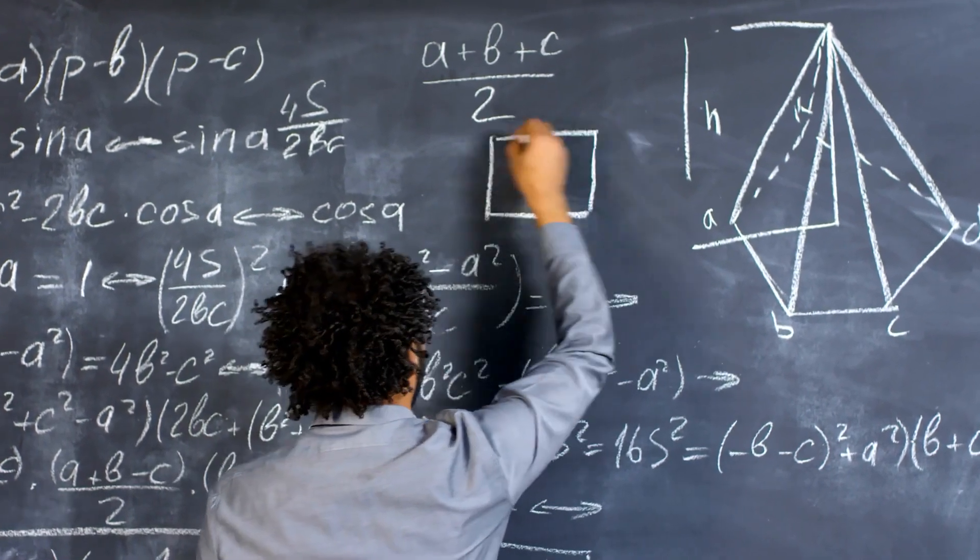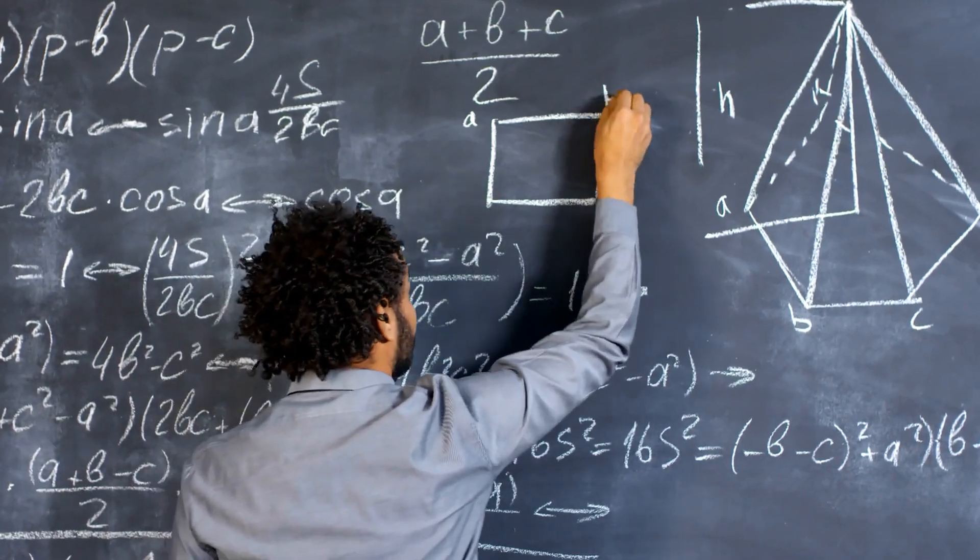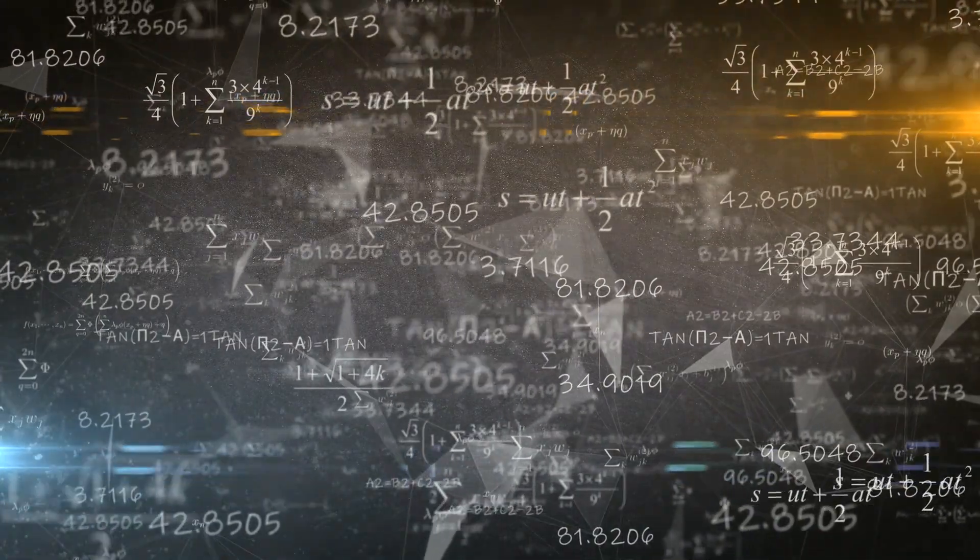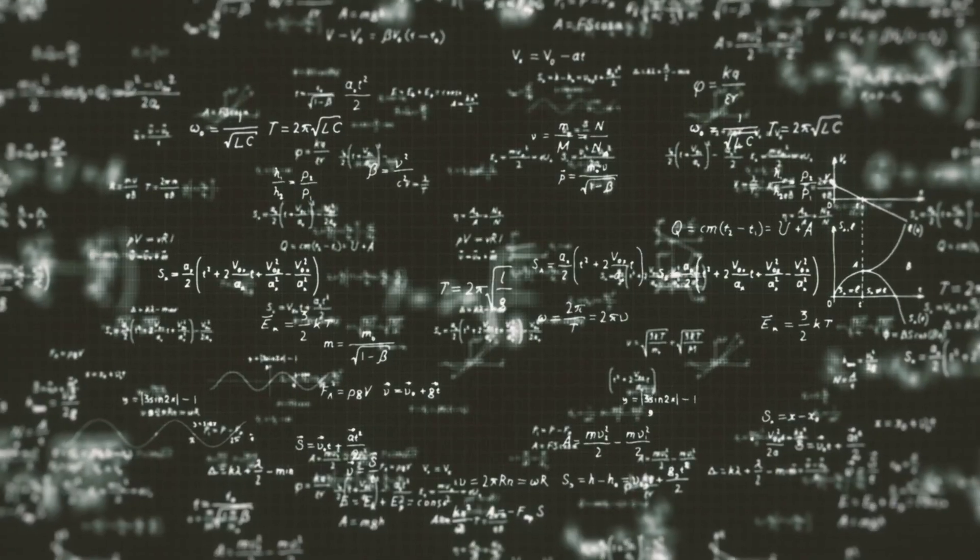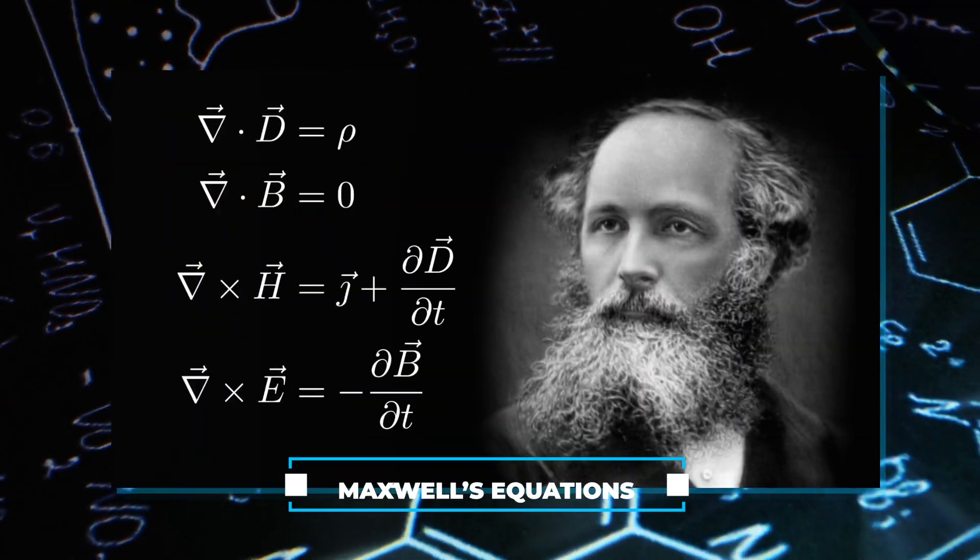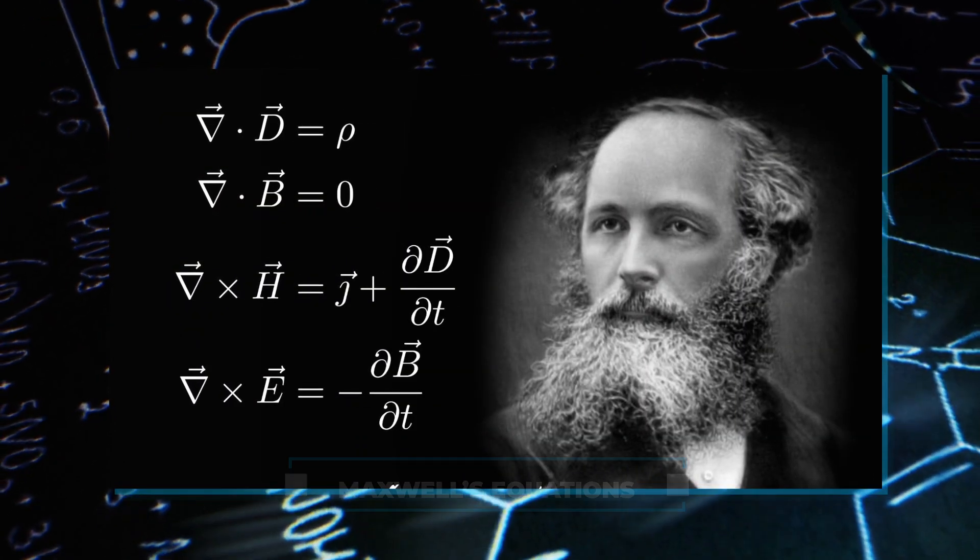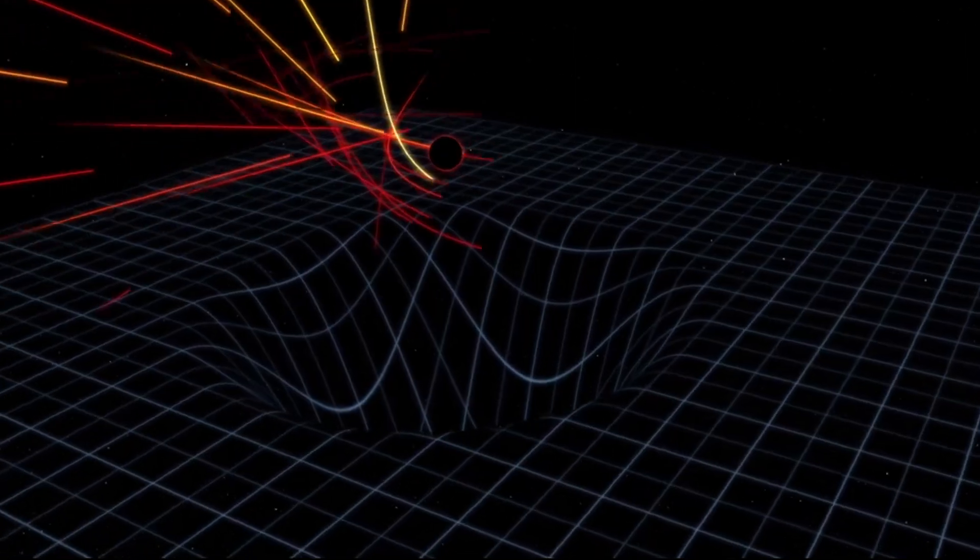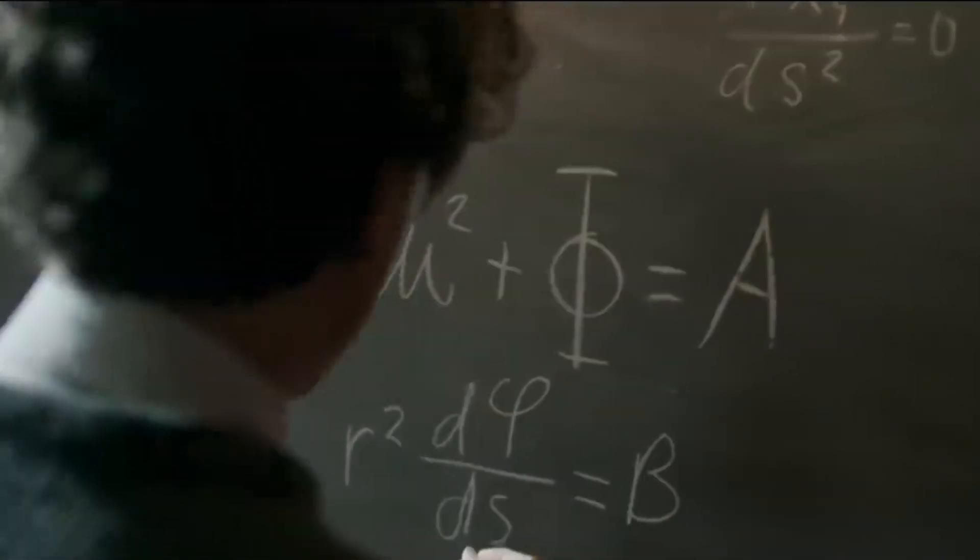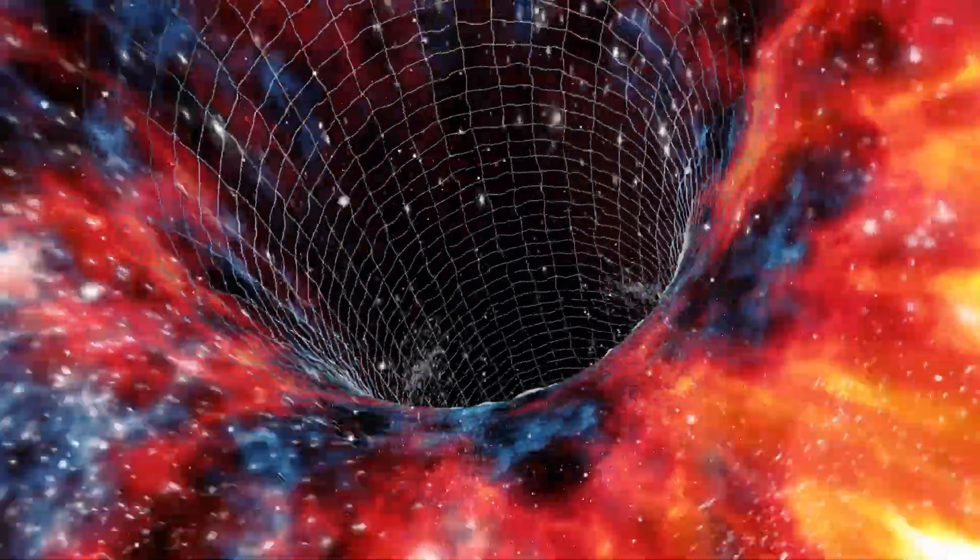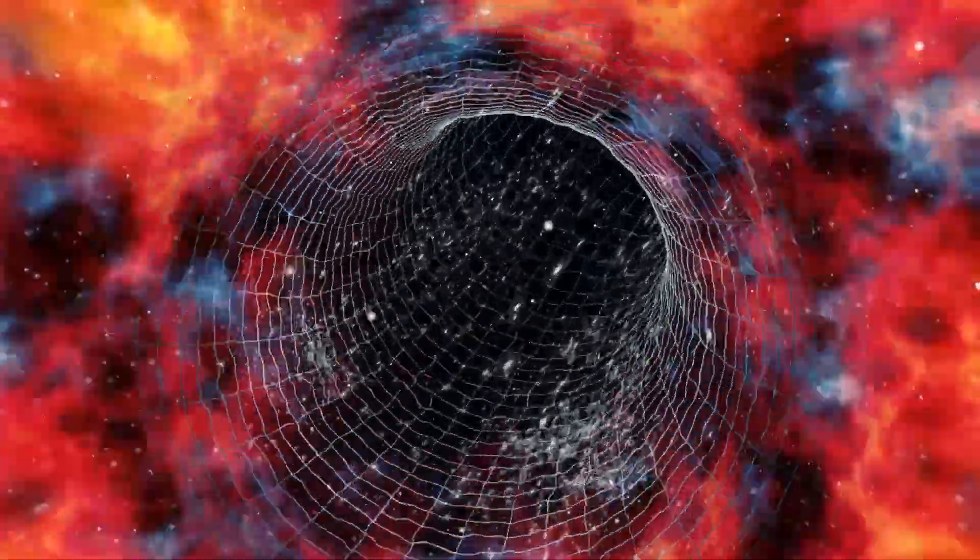Michio Kaku explains that as we explore the universe, we've uncovered some surprisingly simple facts. Scientists use equations to describe how things in the world work. Consider, for instance, the equations that help us understand light. There's a famous set of these equations known as Maxwell's equations, and they're pretty short, about the length of an inch. Additionally, there's another equation by Einstein that explains how gravity functions, and it's a bit longer, about an inch and a half.